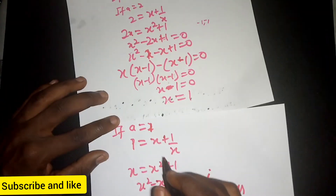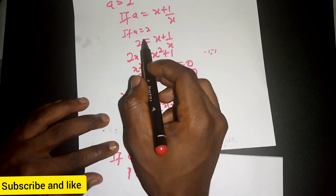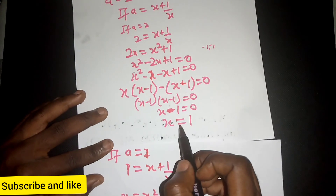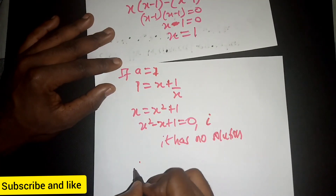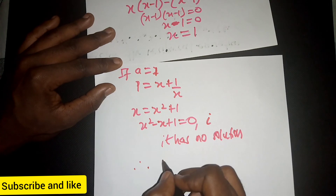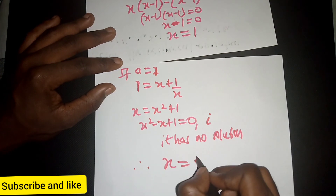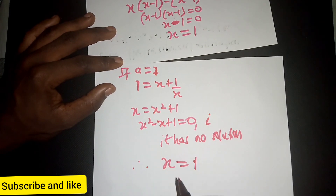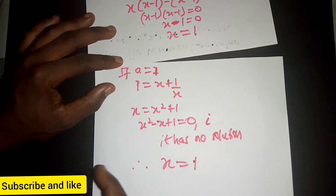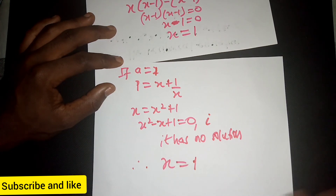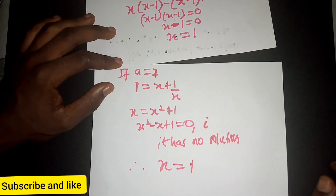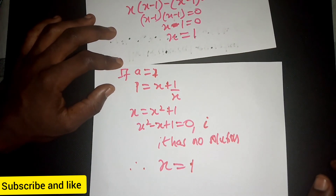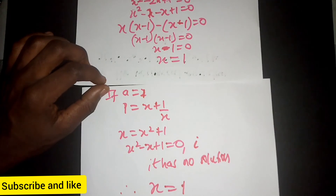Therefore, since a equals 2 gives us s equal to 1, and a equals 1 gives only imaginary values, we conclude that x equals 1. You can substitute x equals 1 back into the original equation to verify it equals 0. Thank you very much for joining me in this section, and I'll meet you in another section.